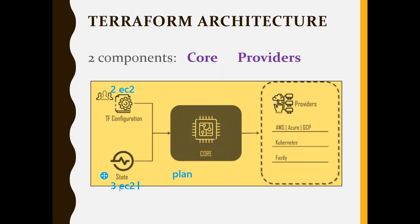Once core creates the plan, it goes to the providers. Providers are programs which will help you implement this plan. There are thousands of providers — for AWS, for GCP, for Kubernetes, and so on. A provider is like a software which helps you interact with a particular API. The AWS provider helps you interact with AWS and gives you control over all the resources in AWS, like all 100 services available.